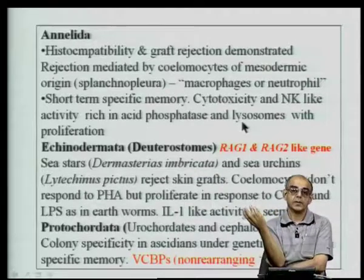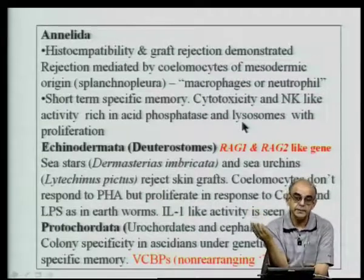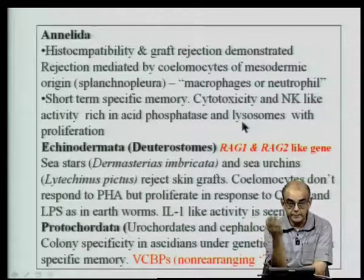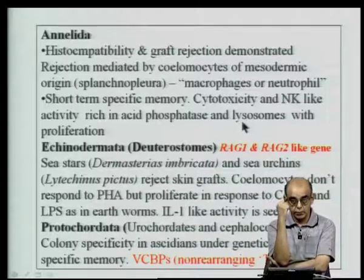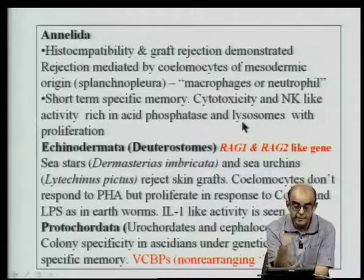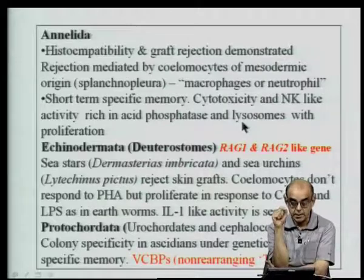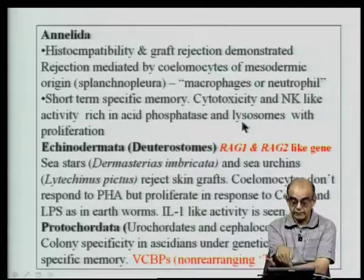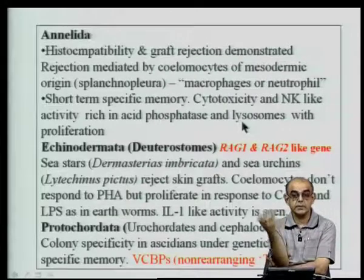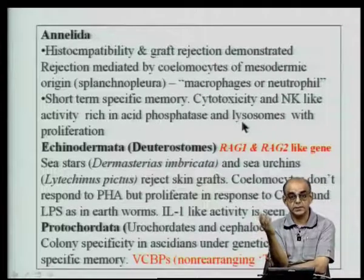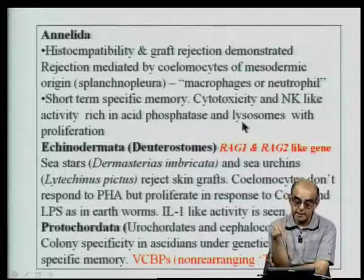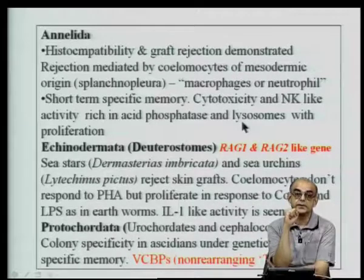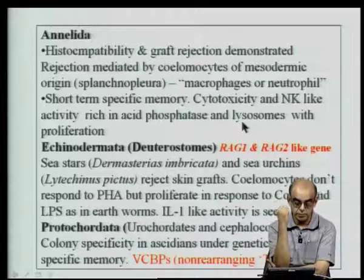LPS, an important ligand for Toll receptors, also activates thymocytes in earthworms, and for the first time IL-1-like activity — an interleukin playing a very important role in higher mammals — is found in sea urchins.